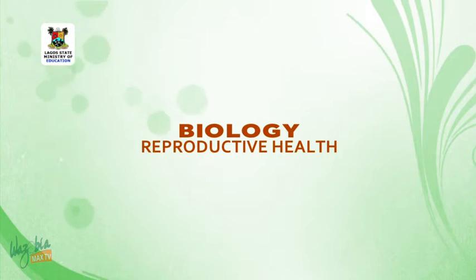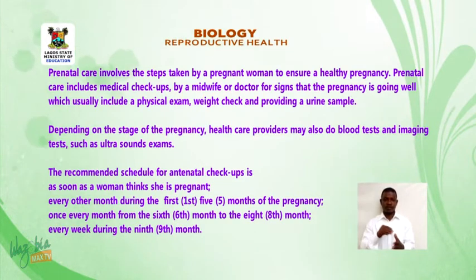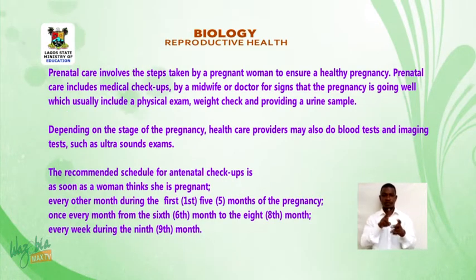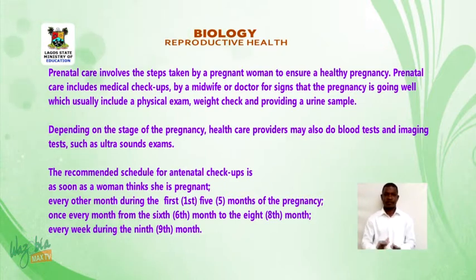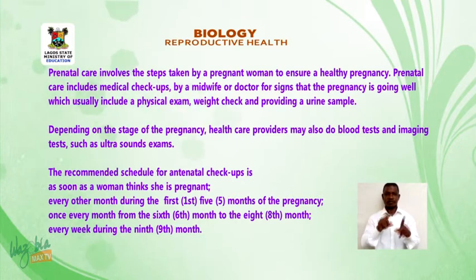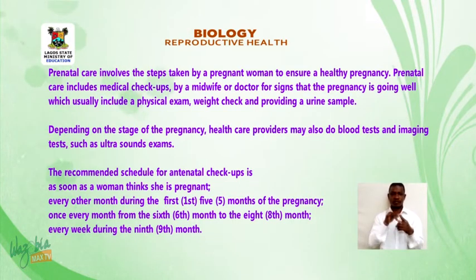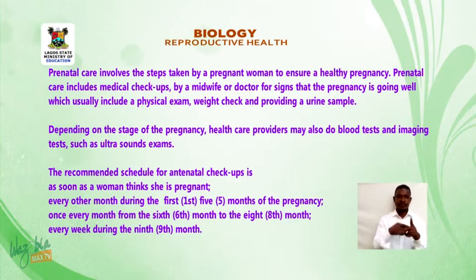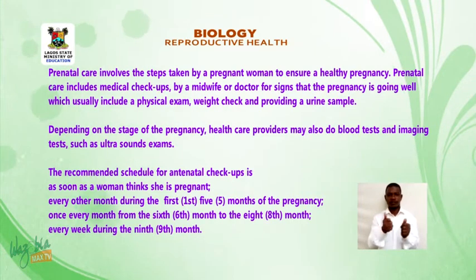Welcome back students. Prenatal care includes medical checkups by a midwife or doctor for signs that the pregnancy is going well, which usually include a physical exam and providing a urine sample depending on the stage of pregnancy. Healthcare providers may also do blood tests and imaging tests such as ultrasound exams. The recommended schedule for antenatal checkups is: as soon as a woman thinks she is pregnant; every other month during the first five months; once every month from the sixth to the eighth month; and every week during the ninth month.